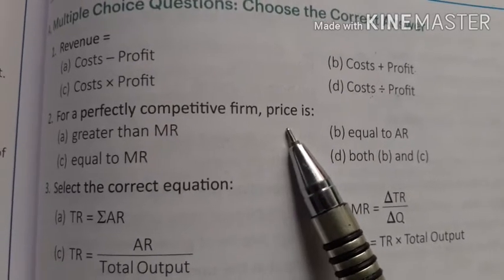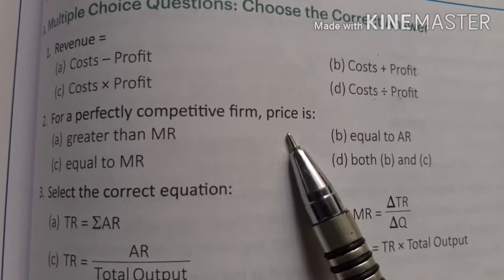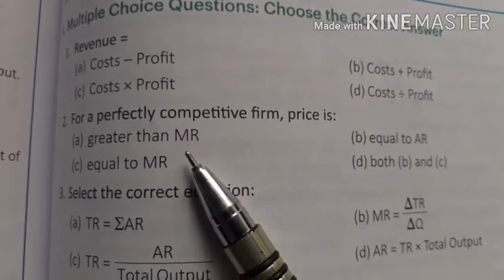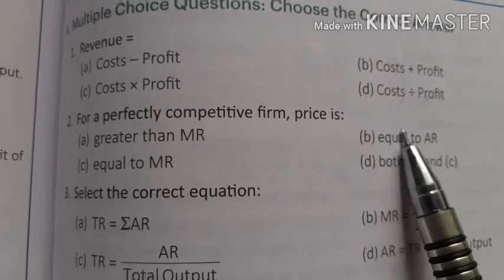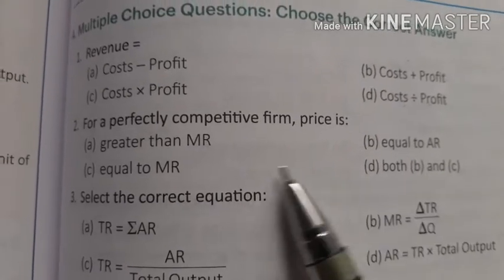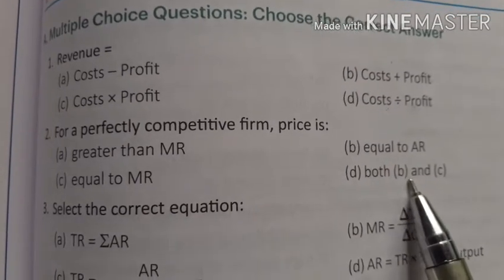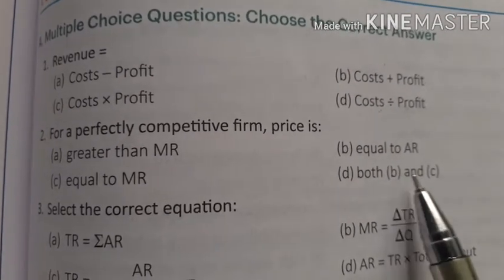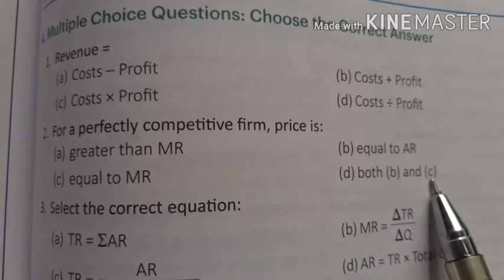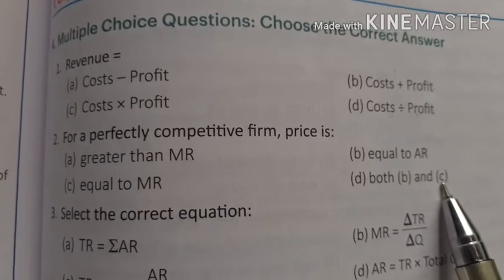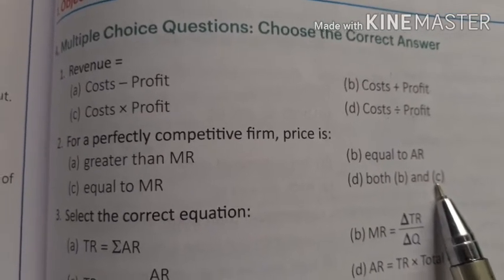The options are: A) price greater than MR, B) price equal to AR, C) price equal to MR, D) both B and C. What is the right answer?